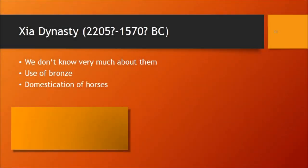Moving on to the next time period — the Xia Dynasty, with dates lasting to about 1570 BC. If we had taken this class a few years ago, there wouldn't have been much to say about it; some people didn't even think it was a real dynasty. But more archaeological investigations in China have discovered that the Xia Dynasty is one of the earliest recorded dynasties. We do know they used bronze, from archaeology, and that they had horses — evidence for horses in China as early as around 2000 BC.